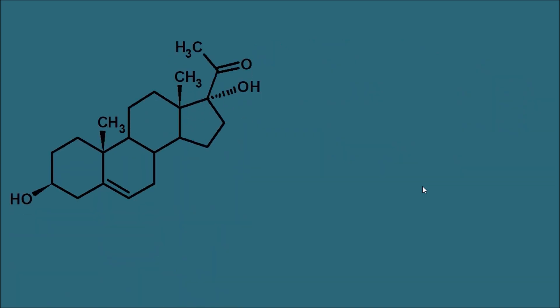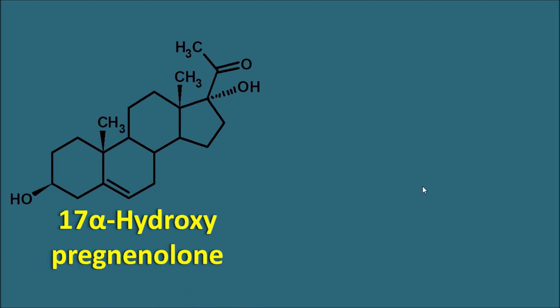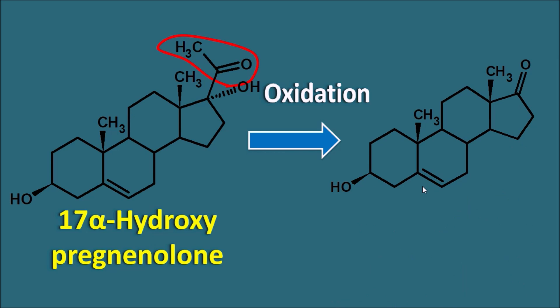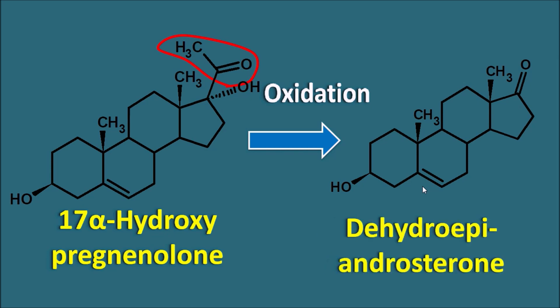In the presence of the hydroxyl group at the 17th position, this carbon side chain can be easily removed. The next step is that 17-alpha hydroxy pregnenolone, which is having a side chain, undergoes oxidation to remove this side chain along with the formation of a ketone group at the 17th position. This product is nothing but dehydroepiandrosterone (DHEA), which has a ketone group at the 17th position.